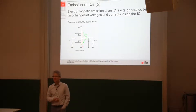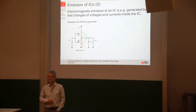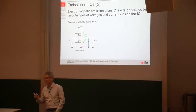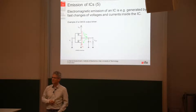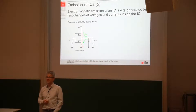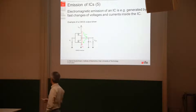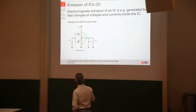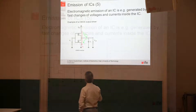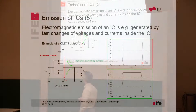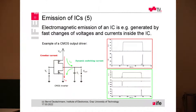What does it mean? Why is it called complementary? Because it always has a PMOS and then an NMOS. So, like in this inverter configuration, there are two transistors. One is a PMOS, the other one is an NMOS.